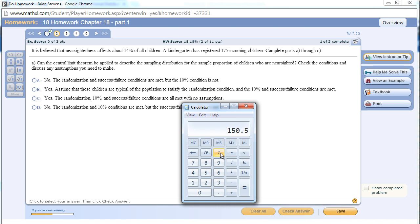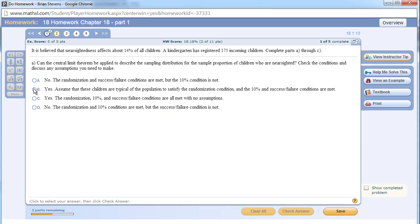It seems to me that these are randomly selected. It doesn't say, and for the test it should say that, but for this problem it doesn't. On the test make sure it says they are randomly selected. The last condition, of course, is the 10%. This is less than 10% of all children, all kindergarten children in the United States, so it passes that.